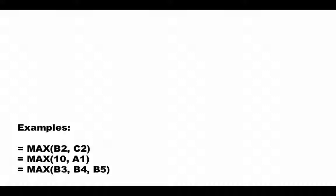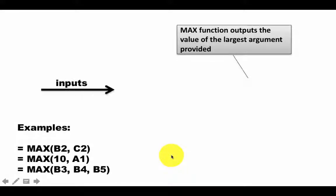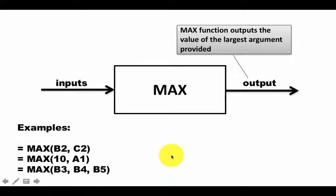Uncommon but we will see that in all the examples we do many functions will have three or four arguments and then you'll have the closing parentheses. So examples of functions would be equals max b2, c2, then you could even say equals max 10, a1. The difference between those two is here 10 is a literal number and this is a cell address or you may have three values equals max b3, b4, b5. So the max function has some inputs and it outputs the largest argument provided.